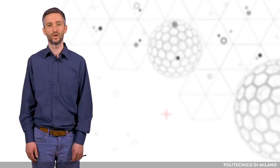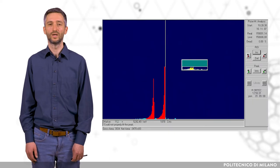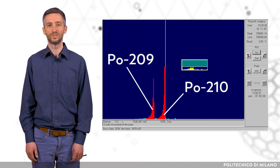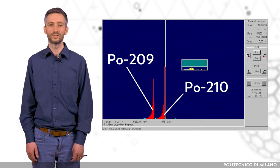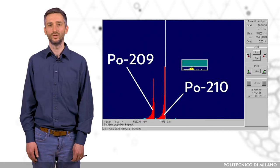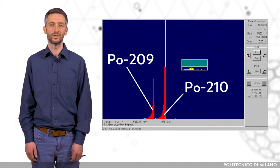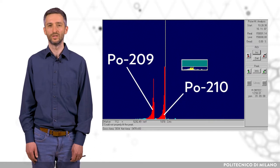But if radionuclides do not emit gamma rays, the probability of emitting them is too low, or they emit gamma rays with a similar energy to interfering radionuclides, then radiochemical separation needs to be performed before qualitative determination. This is also the case for alpha and beta emitters such as polonium-210 and strontium-90.